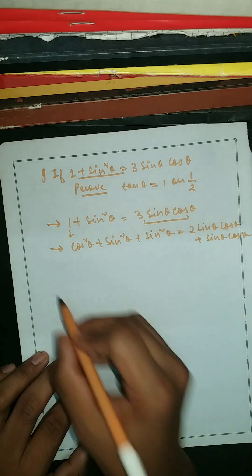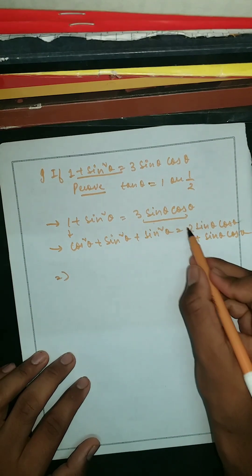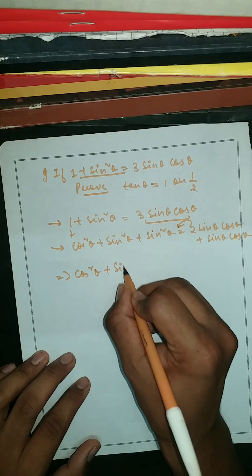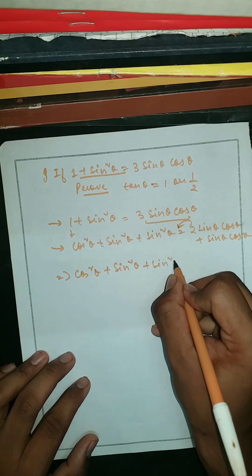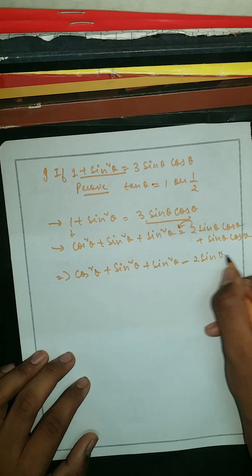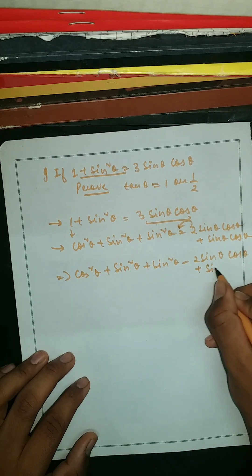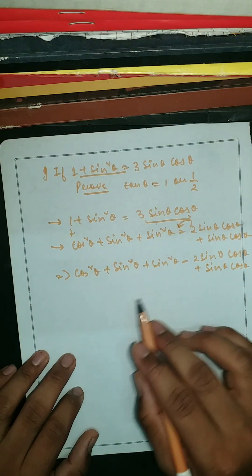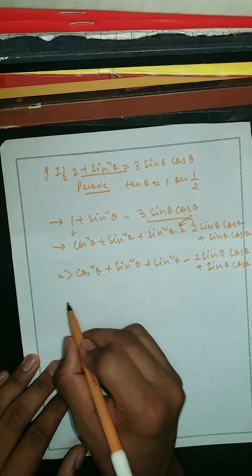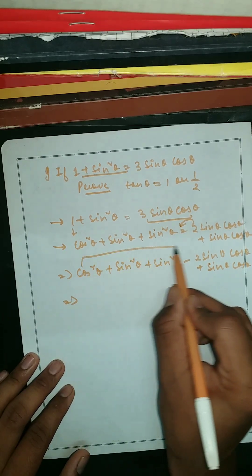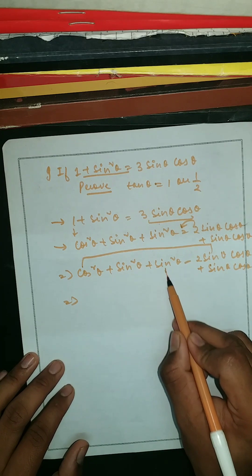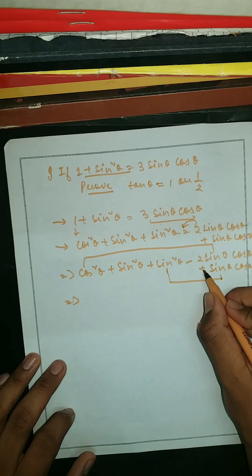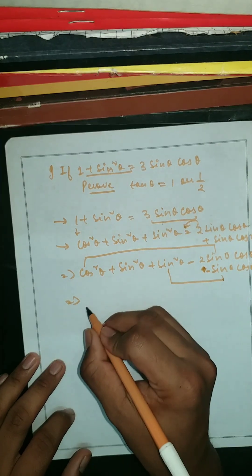So what we're going to do here is take this to the LHS. This should be cos²θ + sin²θ + sin²θ minus 2 sinθ cosθ, then plus cosθ sinθ. We also have to change the sign to minus.